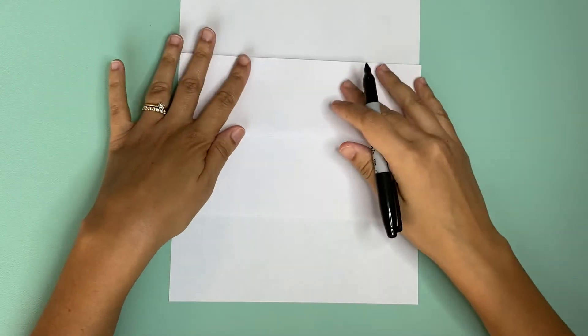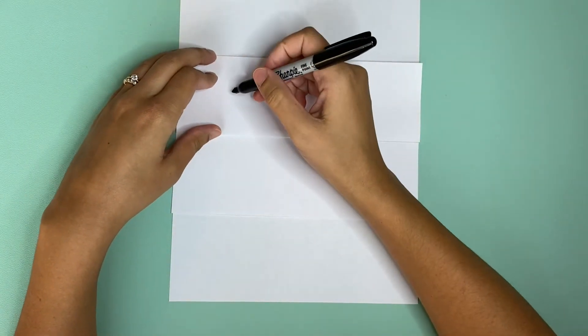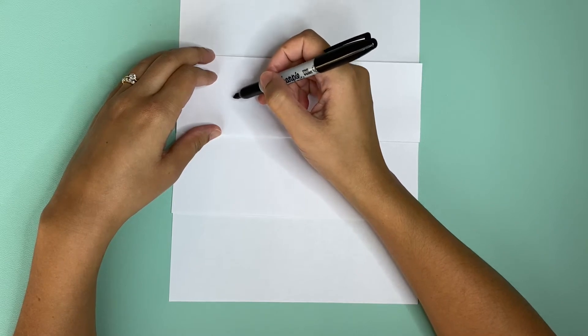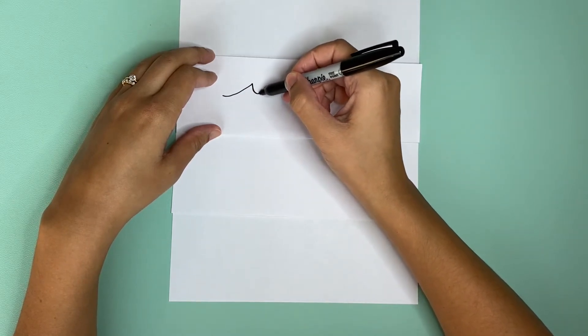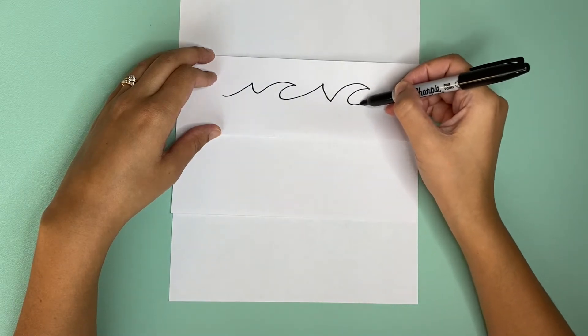Next you get your pen and we're going to start making some water on the outside. You're going to make waves just kind of random wherever you want. My waves are going to look like this, just curves going out.